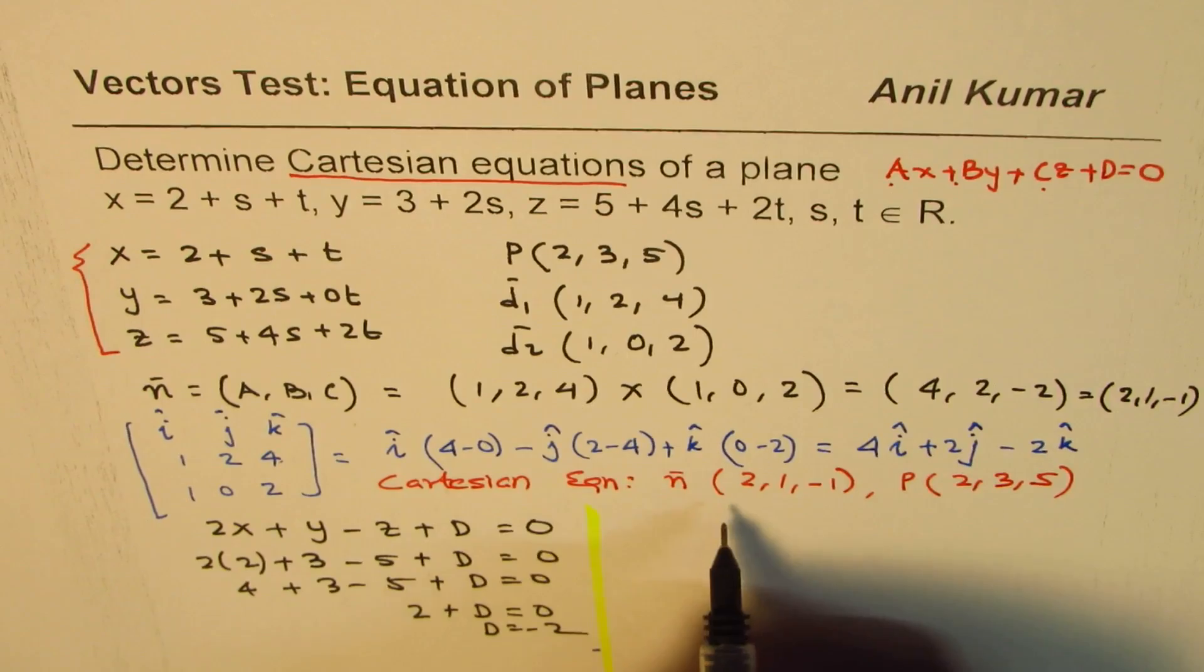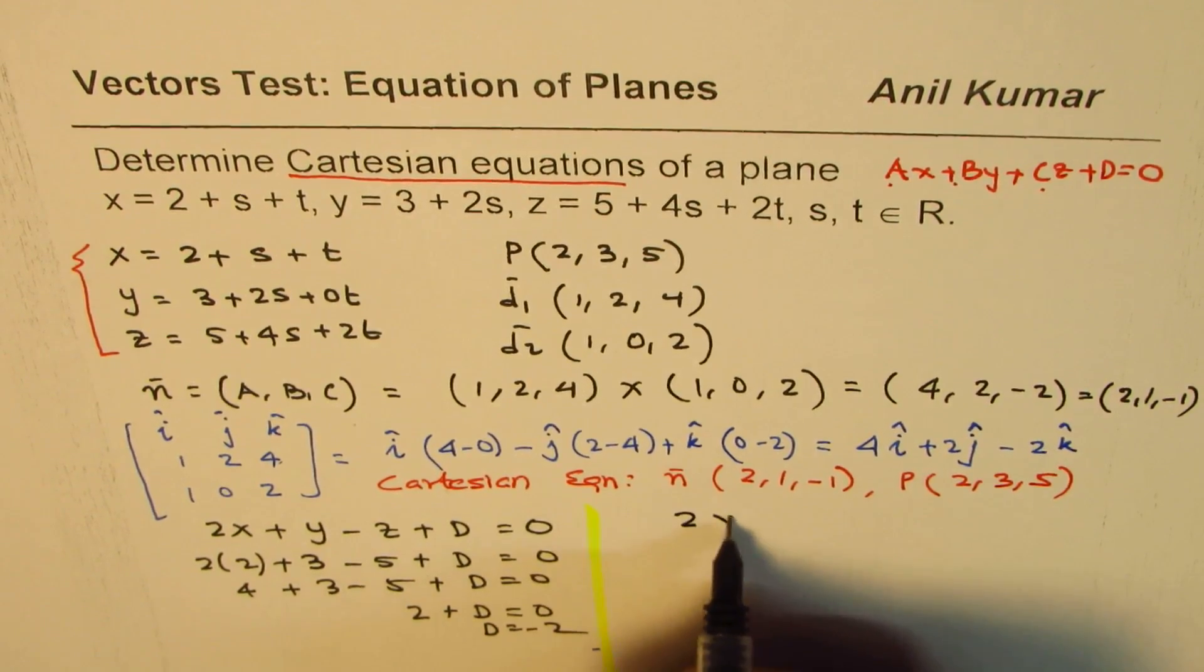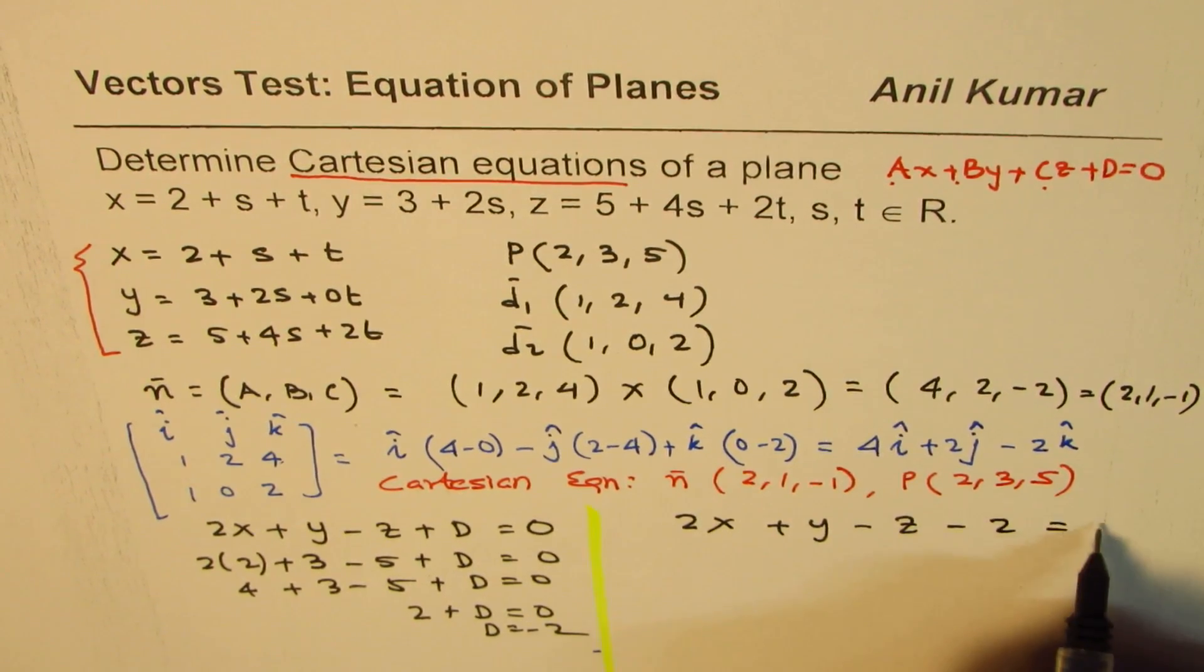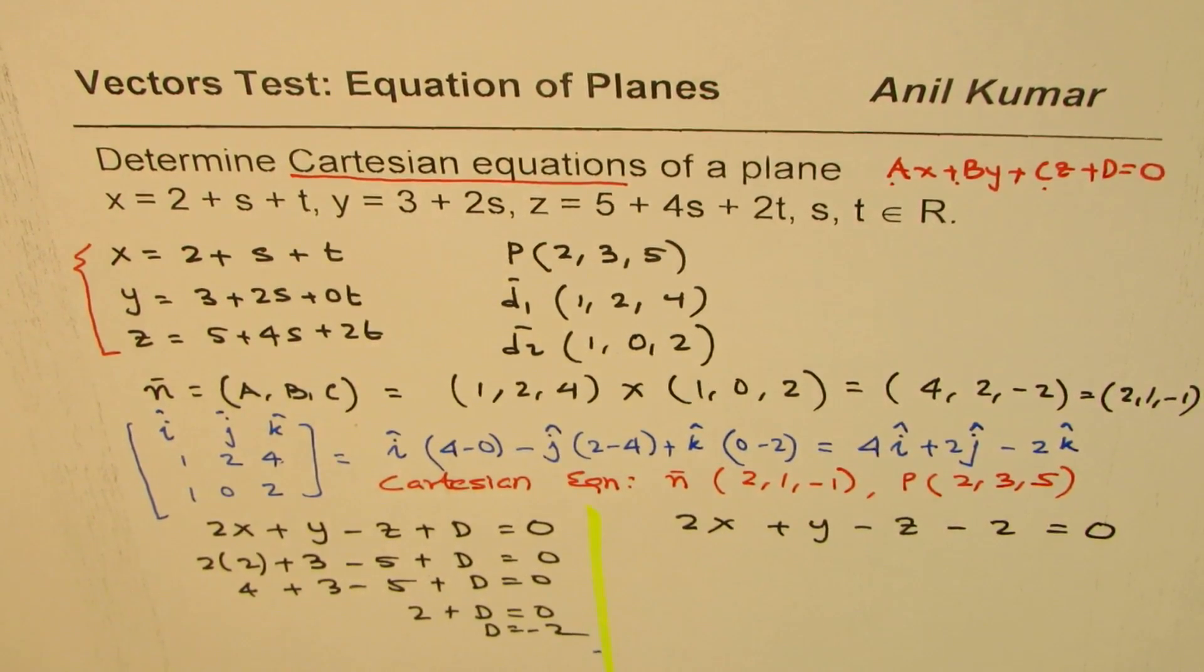So the Cartesian equation is 2x + y - z - 2 = 0. That becomes our Cartesian equation.